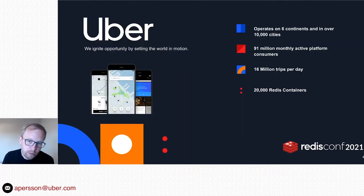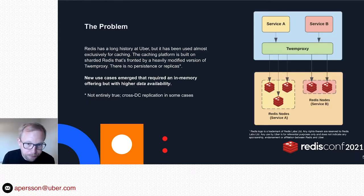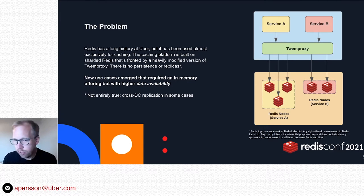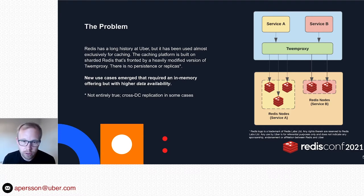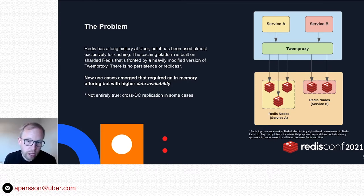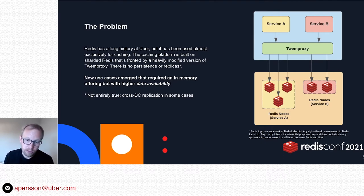Uber provides mobility and delivery services in over 10,000 cities across the world and is a big user of Redis. We have about 20,000 Redis containers in production. Redis has a long history at Uber — when I joined in 2016 it was used for many different things. It continues to be a key component of the stack, but today the main use case really is caching. Services typically have a dedicated cache cluster that they connect to via a Redis proxy — in our case a heavily modified version of Twemproxy. Twemproxy is then responsible for sharding requests across Redis backends, but there's no persistence or replicas for those backends.